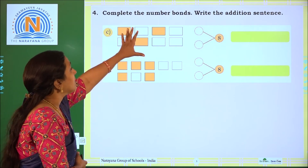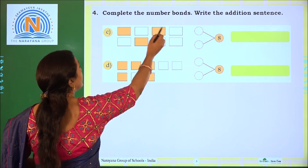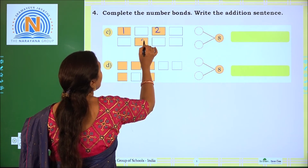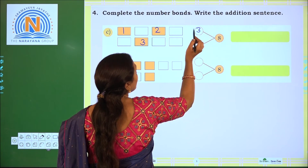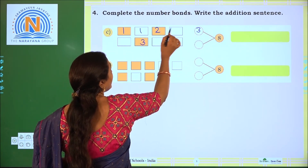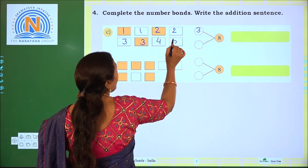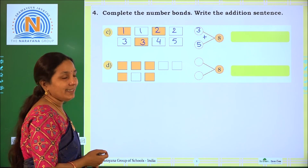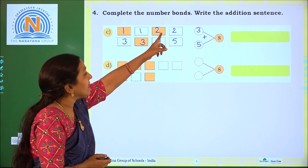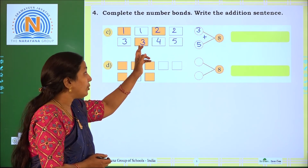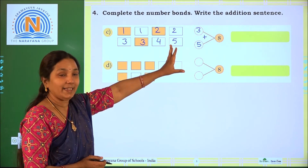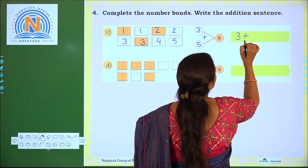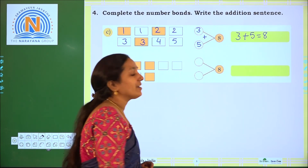Here 6 boxes are given. Some are colored boxes, some are not colored. How many are colored? 1, 2, 3. Number of colored boxes are 3. Number of not colored boxes are 1, 2, 3, 4, 5. So there are 5 uncolored. By adding 3 plus 5, what do you get? 8. Counting: 3, then 4, 5, 6, 7, 8. Total is 8. So 3 and 5 make 8. The addition sentence is 3 plus 5 equal to 8.